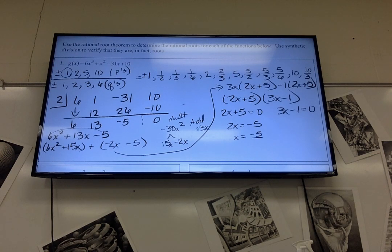And we set them equal to 0 to get the roots. Negative 5 over 2. So we have negative 5 over 2 and 1 third.